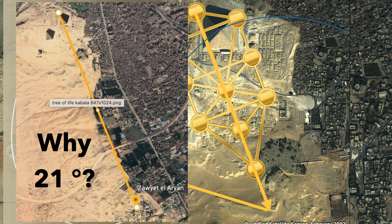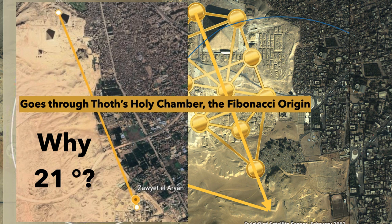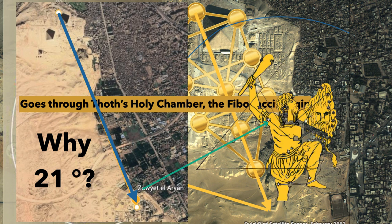I did a search on Google Earth and you see at the Great Pyramid I draw a line that goes through Toth's Holy Chamber — the Fibonacci origin — but it continues down to Zawiat El-Erian. In my study of the constellation Orion being brought down to Egypt's soil, that is Betelgeuse — that's the shoulder. The pyramid at Zawiat El-Erian is the shoulder of Orion.